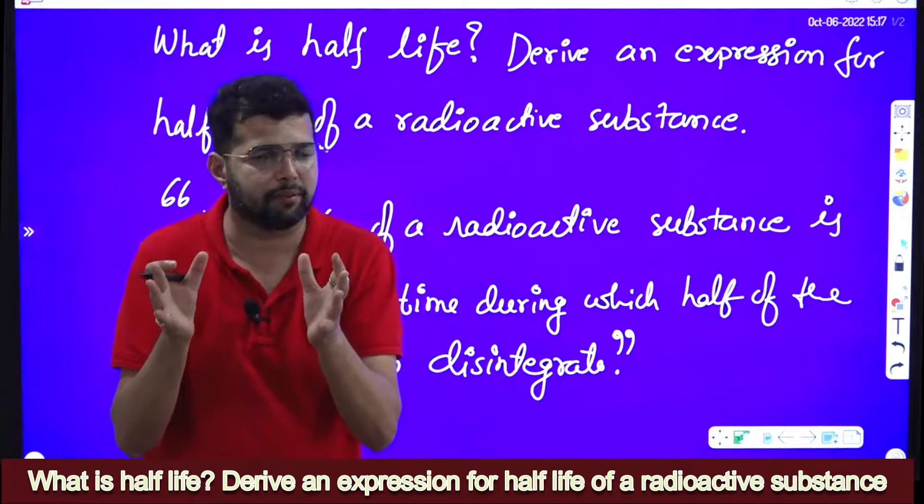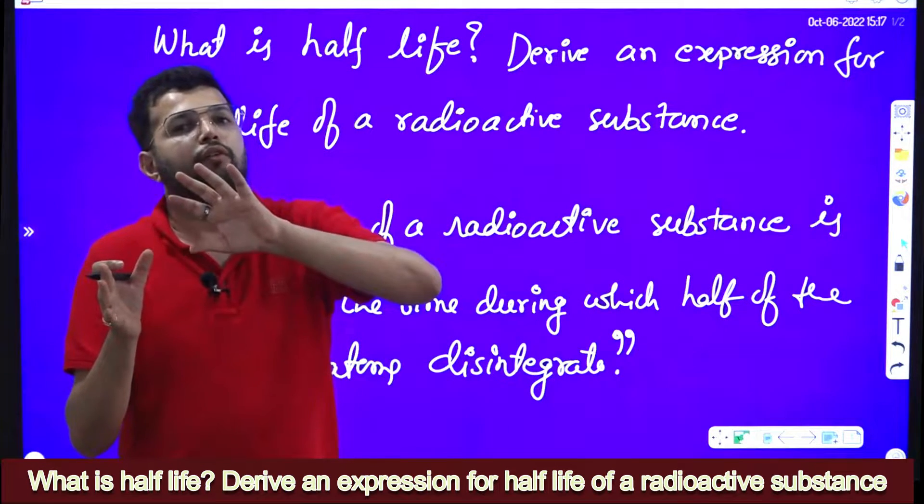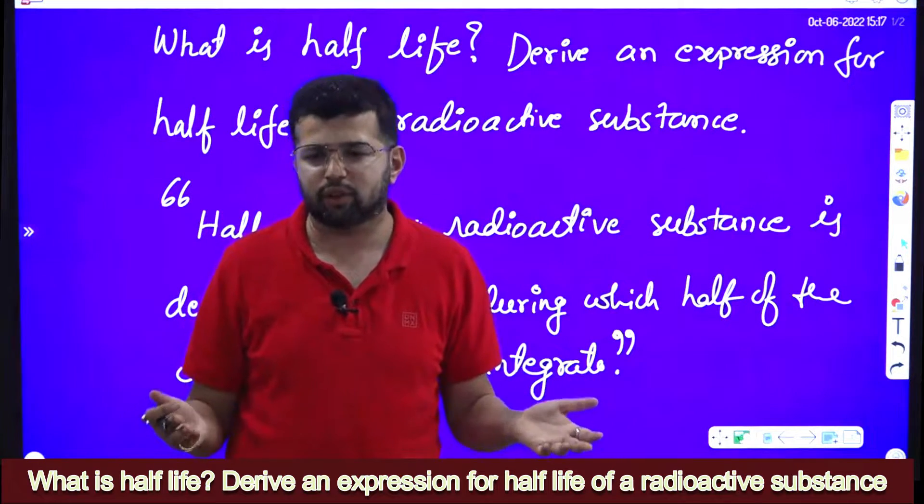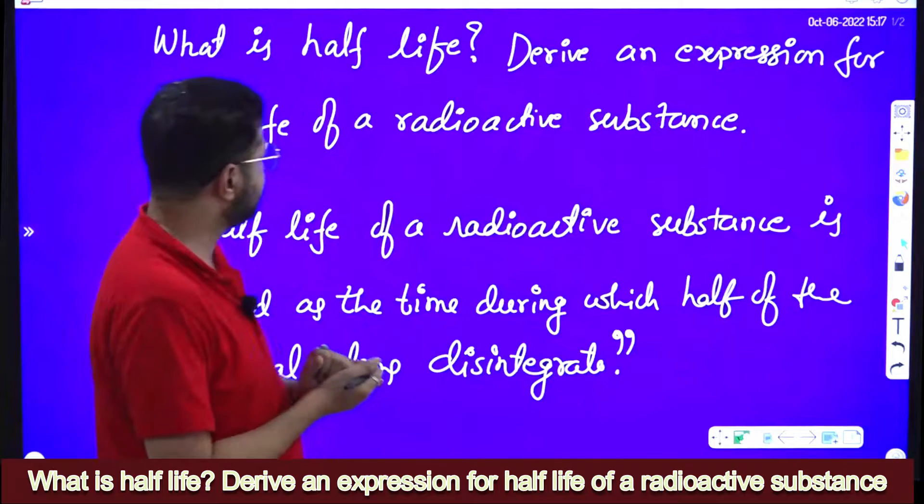Originally 100 radioactive atoms are there. For the 50 radioactive atoms to disintegrate, what is the time required? That is called half-life of the radioactive substance.